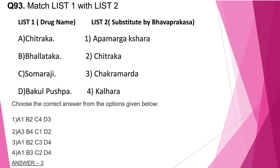Question number 93: Substitutes mentioned in Bhava Prakasha are three-star topics. The Abhava Dravya for: A — Chitraka is Apamarga Kshara; B — Bhallataka is Chitraka; C — Somaraji is Chakramarda; D — Bakula Pushpa is Kalhara. The correct answer is option 3.